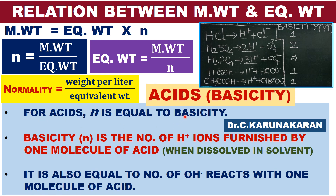For acids, N is equal to basicity. Basicity is defined as the number of H+ ions furnished by one molecule of acid. For hydrochloric acid, basicity equals 1 because one molecule furnishes 1 H+ ion. For sulfuric acid, it gives 2 H+ ions, so basicity equals 2. For phosphoric acid, it gives 3 H+ ions, so basicity is 3.